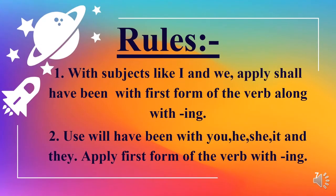Now we will discuss the rules regarding future perfect continuous tense. First rule: apply 'shall have been' with subjects such as I and we, with the first form of the verb along with -ing. Yani is tense mein I, we ke saath 'shall have been' lagayin aur verb ki pehli form aur -ing lagayin. Second rule: use 'will have been' with you, he, she, it, and they, then apply first form of the verb with -ing.